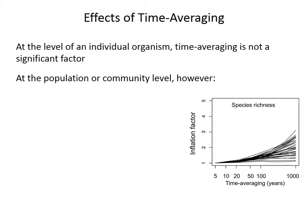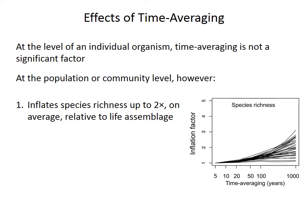At the level of an individual organism, if describing species or understanding morphology is our concern, time averaging is not a significant consideration. But if we're interested in understanding species richness or habitat preferences — these population or community level attributes — we do have to understand how time averaging can bias those measures. Most importantly, species richness — the number of species found in a given death assemblage — is inflated relative to the life assemblage that produced those shells. Depending on the scale of time averaging, species richness can be up to two times or even greater in the death assemblage relative to the life assemblage.